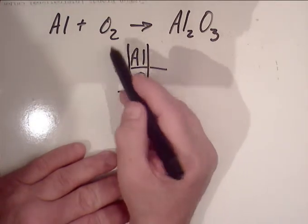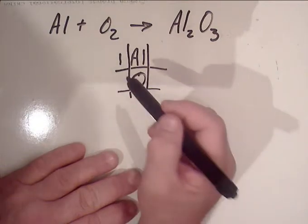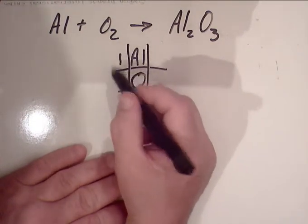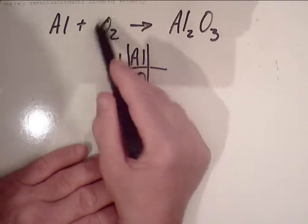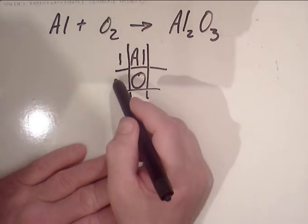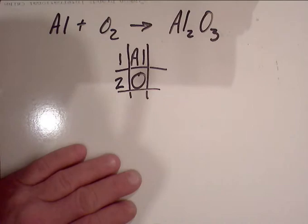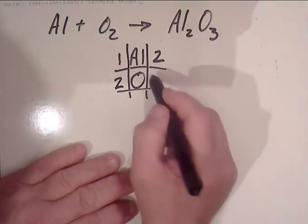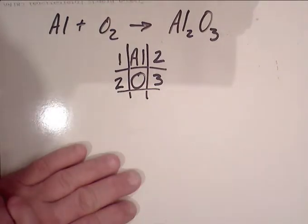On the left side we have one aluminum on the reactant side, and two oxygens on the reactant side. On the product side we have two aluminums and three oxygens.